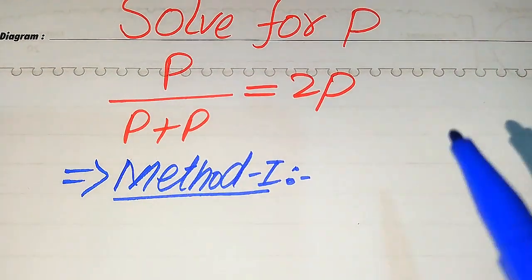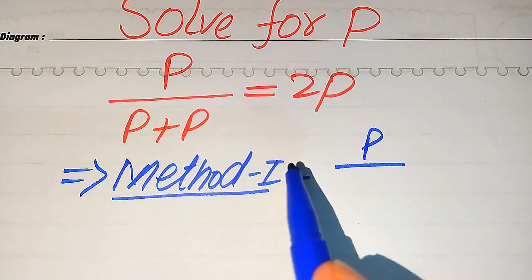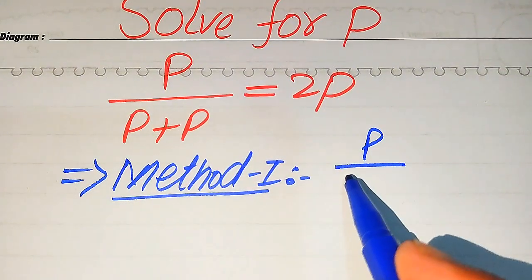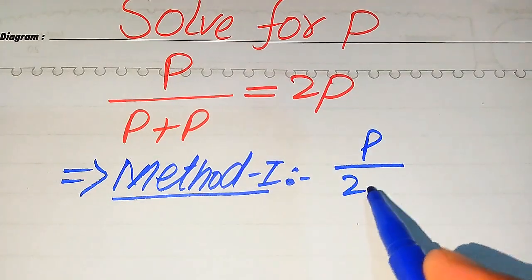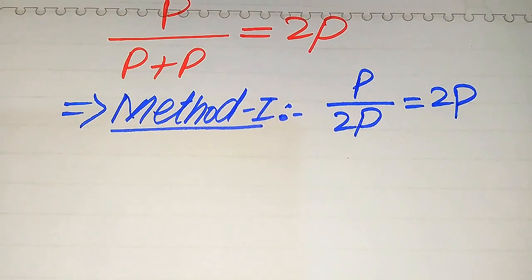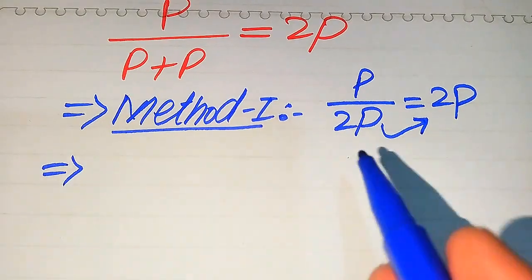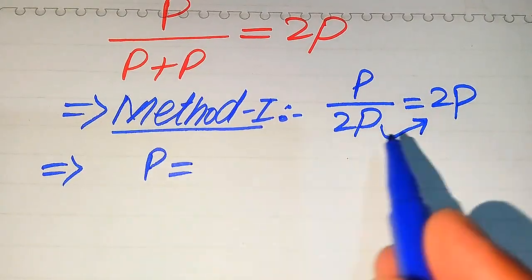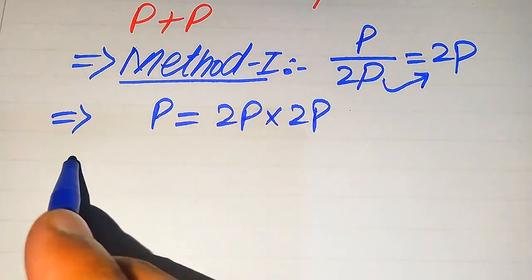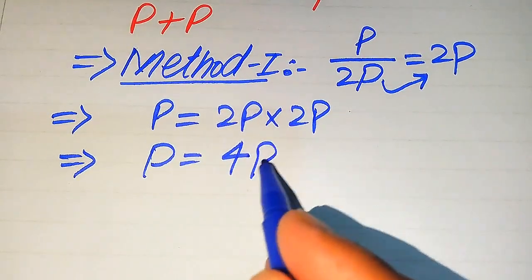In the first method, you see here these are the two variable terms. When we add two variable terms, we just add the coefficients. The coefficients of both terms are one, so one plus one becomes two, giving us 2p equals 2p. In order to find all the roots, we move the 2p to the right-hand side, where it becomes multiplied, giving us 2p multiplied by 2p. So p equals 2 times 2 which is 4, and p times p becomes p squared.